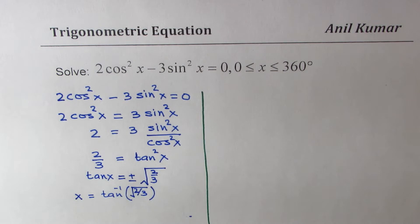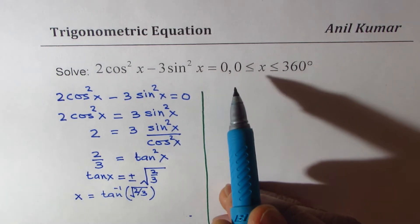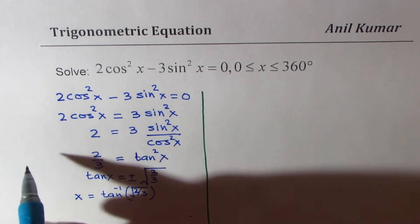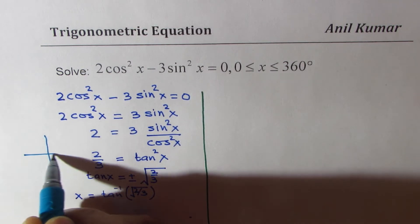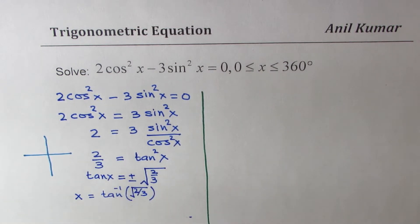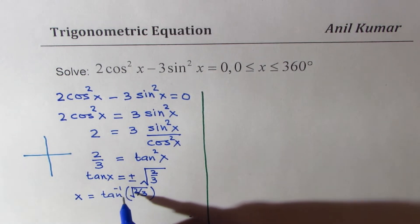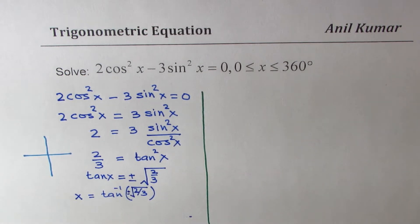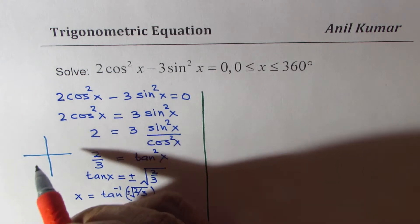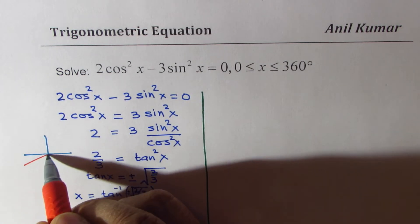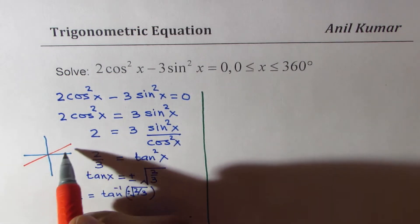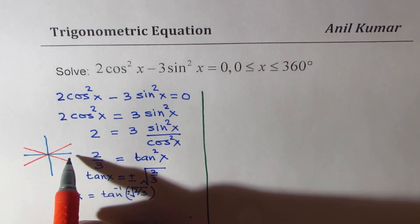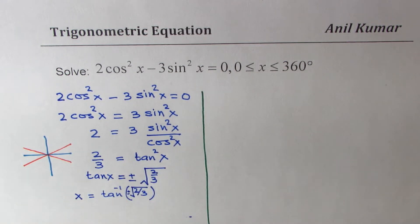And also remember, we are given this domain from 0 to 360 degrees. That means we are looking into plus and minus values, so that means we are looking into 4 solutions. The 4 solutions will be kind of like this.